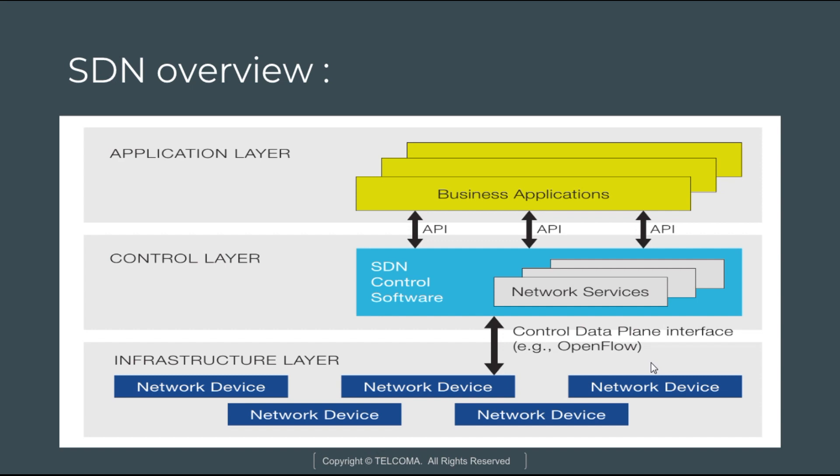In the data plane or infrastructure layer, management is at least required for initially setting up the network elements, assigning the SDN control parts, and configuring the SDN controller. In the control plane or control layer, management needs to configure the policies which are required to define the scope of control given to the SDN applications and also to monitor the performance.